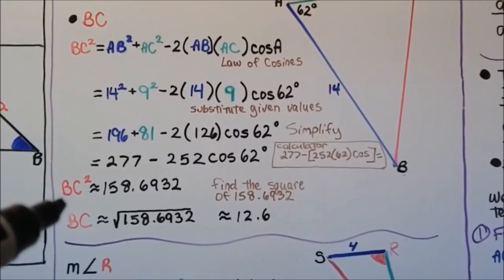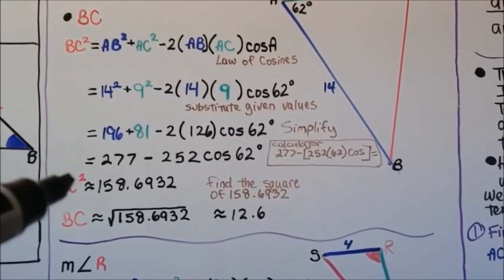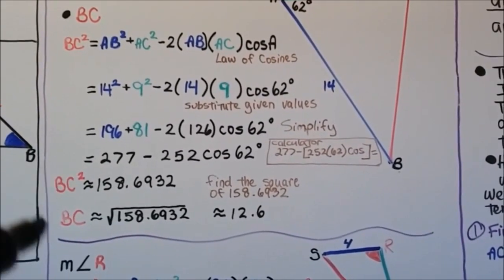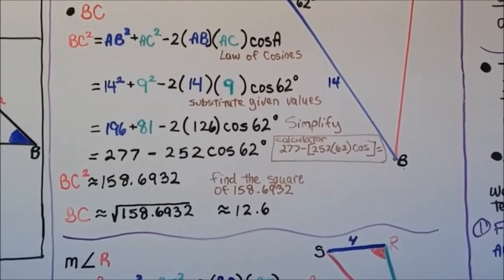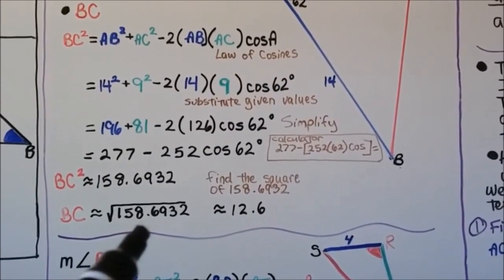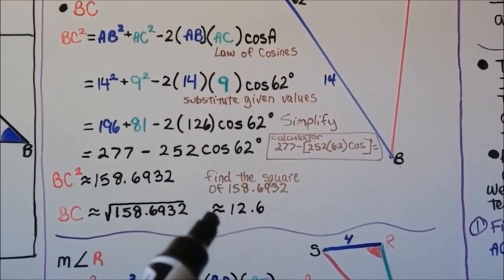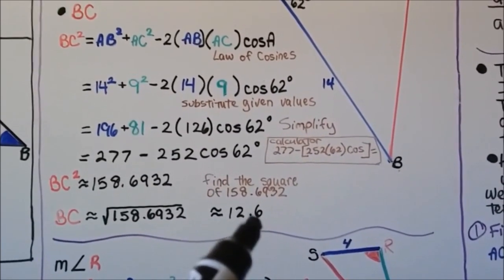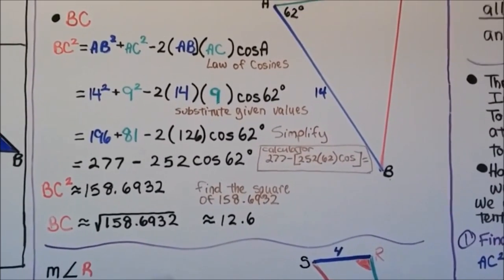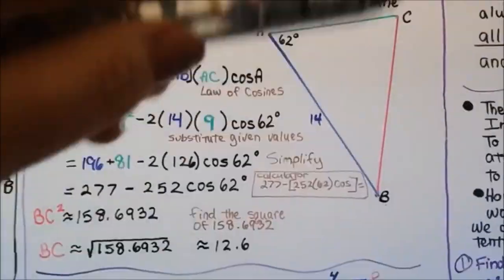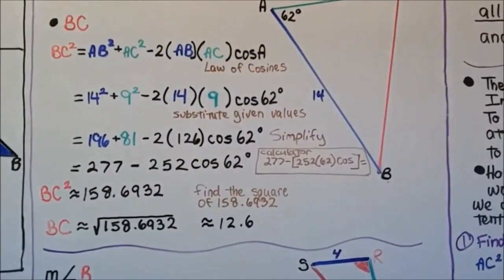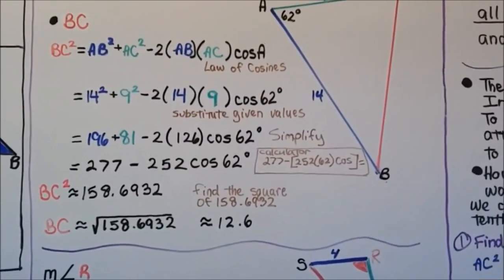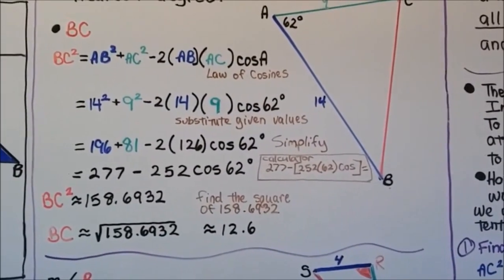Because this is BC squared, we take the square root. We find the square root of 158.6932, which comes out to approximately 12.6. So side BC is approximately 12.6.